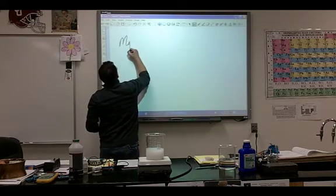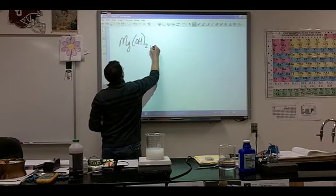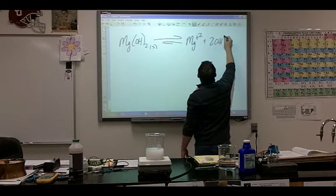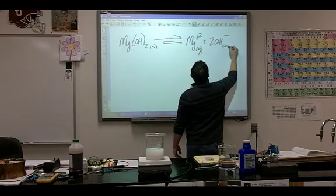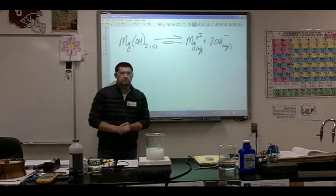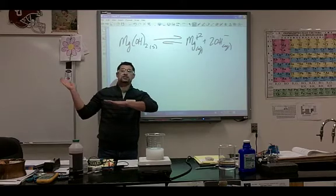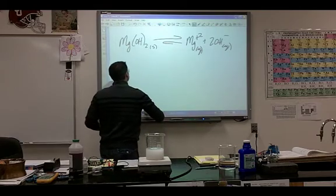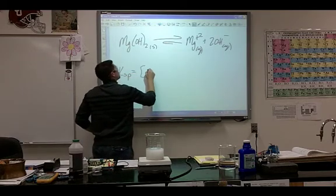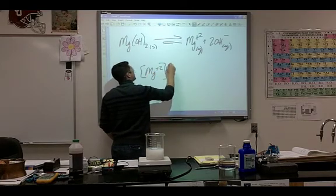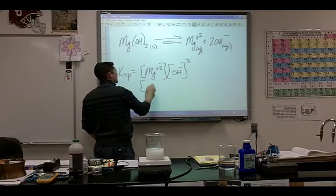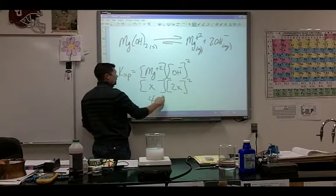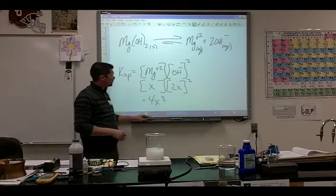Okay. Magnesium hydroxide looks like this. So what would the expression look like? Magnesium plus two and two hydroxides. What would you expect its KSP value to be? Large or small? Small. Small because it's insoluble. Right? Yes. Okay. What would my KSP expression be? Magnesium times hydroxide squared. This is going to be X, this is going to be 2X squared, right? Which is 4X cubed. Okay. Good, good, good.